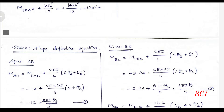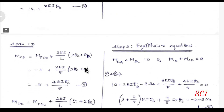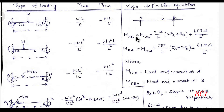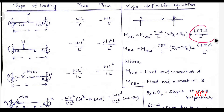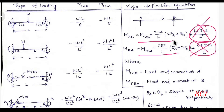Step 2: Slope deflection method. We apply the slope deflection equation, for which we already have the formula: M_AB = MF_AB + (2EI/L)(2θA + θB - 3δ/L). The sinking term delta cancels out for this problem, so we solve the remaining expression.